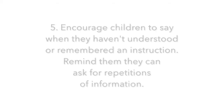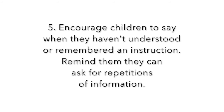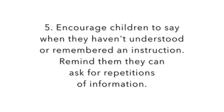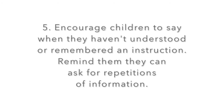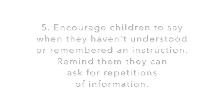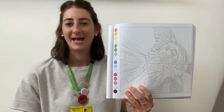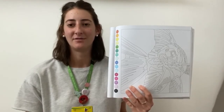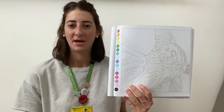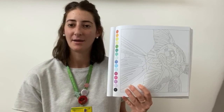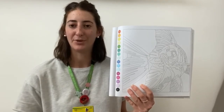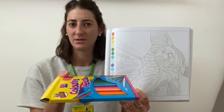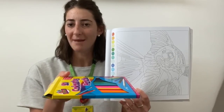Encourage children to say when they haven't understood or remembered an instruction. Remind them that they can ask for a repetition or clarification of the information. Can you colour his tail orange and his eye blue? Do you understand? Would you like me to say it again?